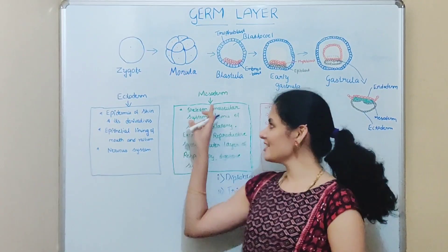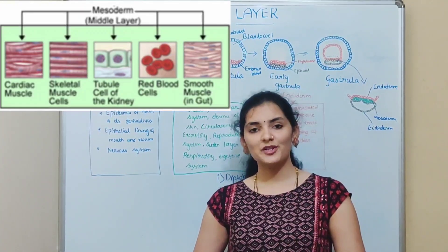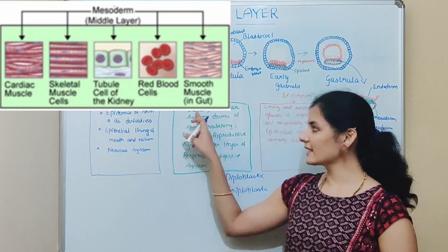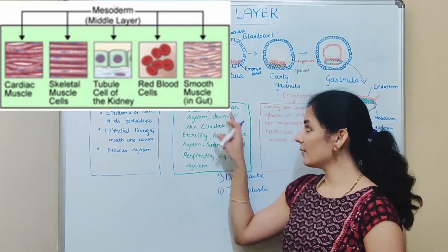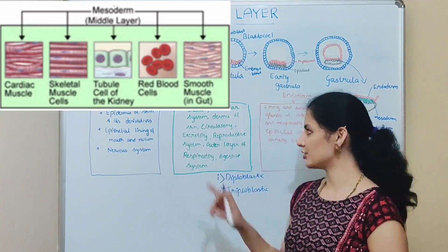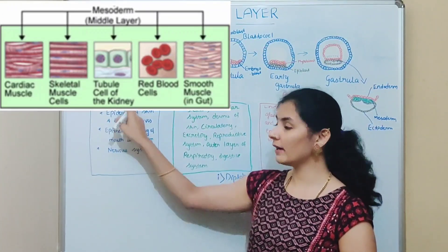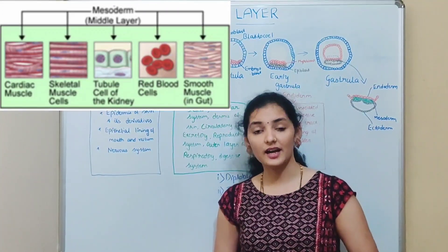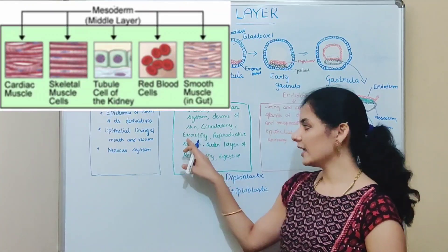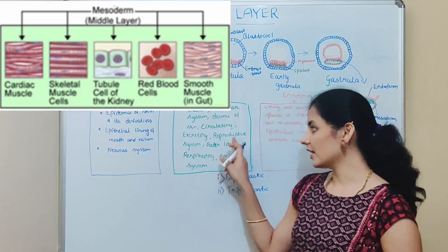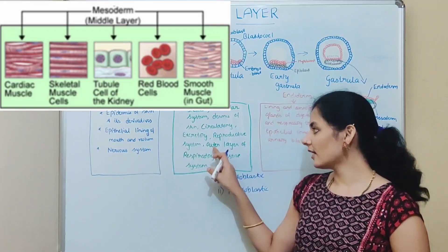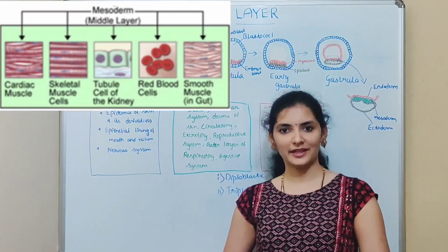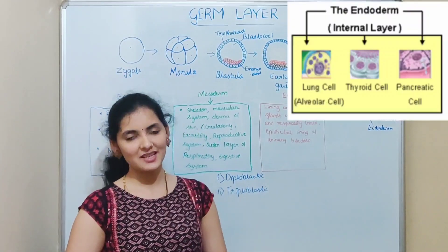The second layer is mesoderm, the middle layer. It leads to the formation of the body cavity called the coelom. The mesoderm also forms the majority of organ systems: the skeletal system consisting of bone and cartilage, the muscular system comprising all types of muscle tissue, the dermis of the skin — note that the epidermis is from ectoderm but the dermis is from mesoderm — the circulatory system including the heart, the excretory system comprising kidney and ureter, the reproductive system containing gonads, and the outer musculature and connective tissue of the respiratory and digestive systems.